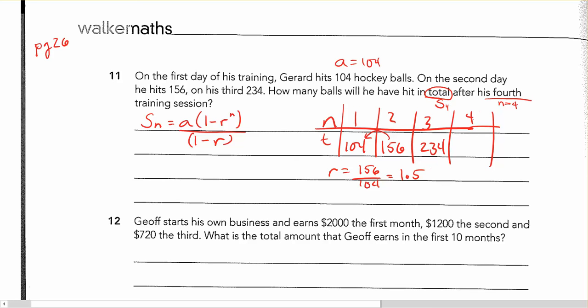And now that I've got that, I can go straight to the sum formula and use that. Or you could potentially just do this the easy way. And go 234 times 1.5, 351. And then you could add up those four numbers.